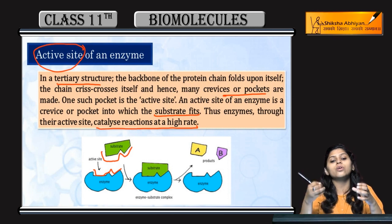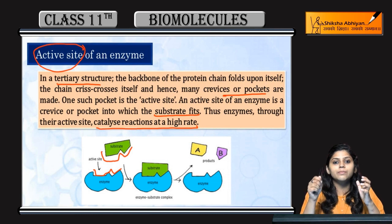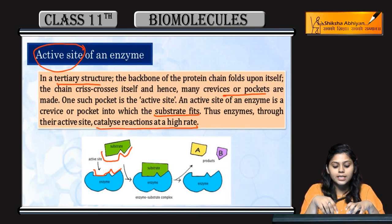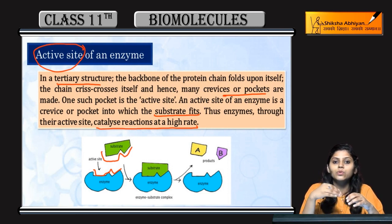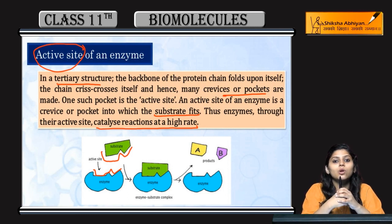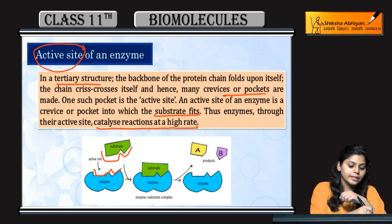Yhe lock and key ki tara act karte hain. Jaise ek lock hai, us mein sirf ek hi shape ki chaabi lagti hai. Waise hi active site pe sirf ek hi substrate bind ho sakti hai jiski shape is similar to active site. Yhe lock and key ki tara structure banaya, isse lock and key hypothesis bhi bolte hai.